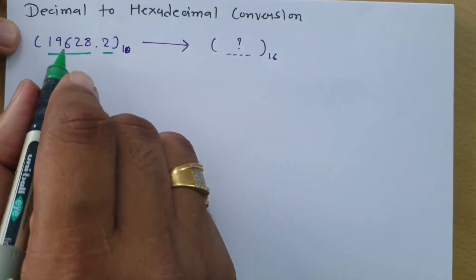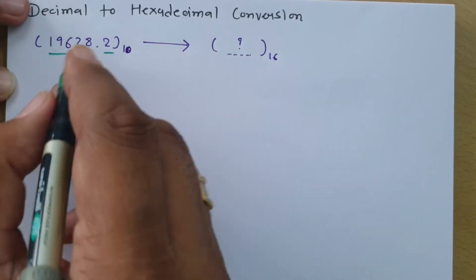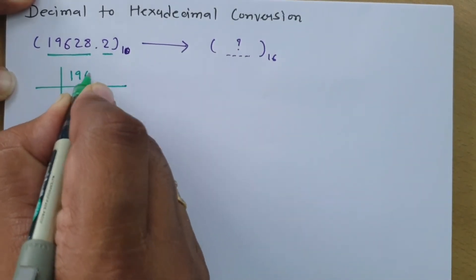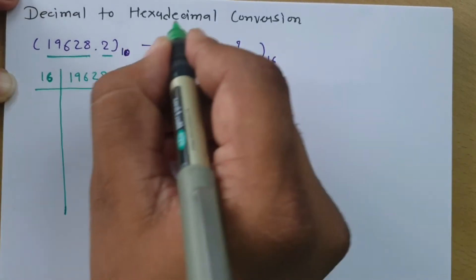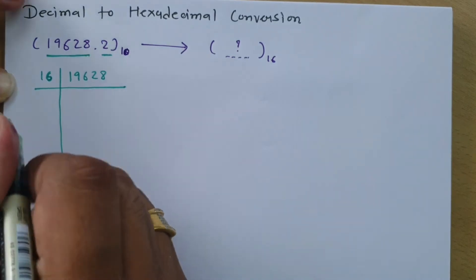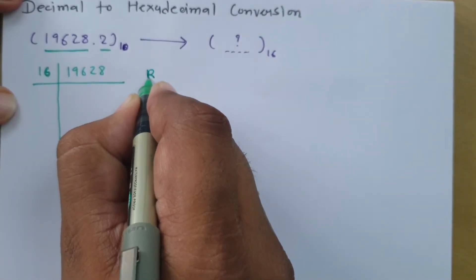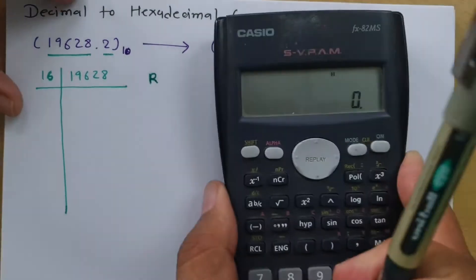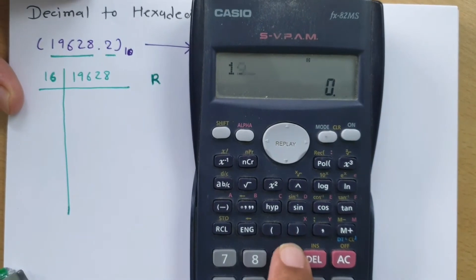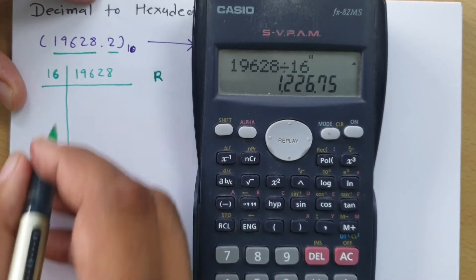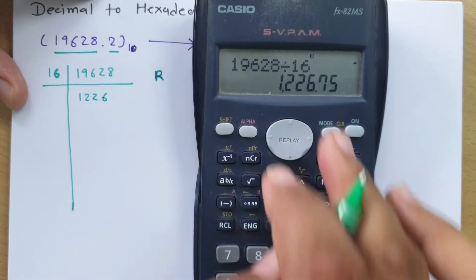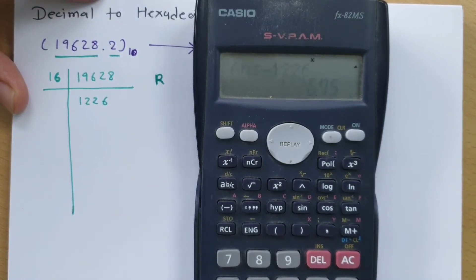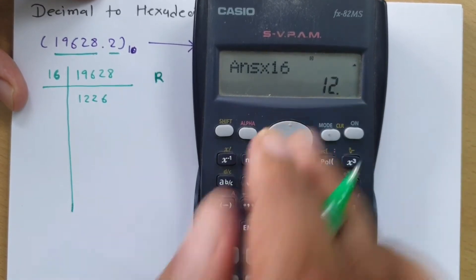Applying the division rule to 19628: we divide by 16, since the base of hexadecimal is 16. 19628 divided by 16 gives 1226 with a remainder. The fractional part 0.75 multiplied by 16 gives remainder 12. So the first remainder is 12.